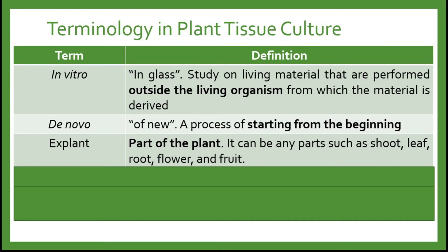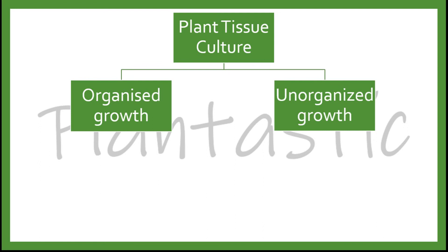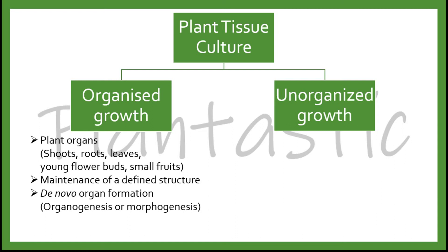Aseptic is a condition that is free from microbes. Totipotency is the ability of an explant to grow and regenerate while retaining all the general features of a mother plant. In plant tissue culture, there are two types of growth: organized and unorganized growth. Organized growth starts with the plant's organs such as shoots, roots, leaves, young flower buds, or small fruits. It is considered as the maintenance of a defined structure through novel organ formation, known as organogenesis or morphogenesis.